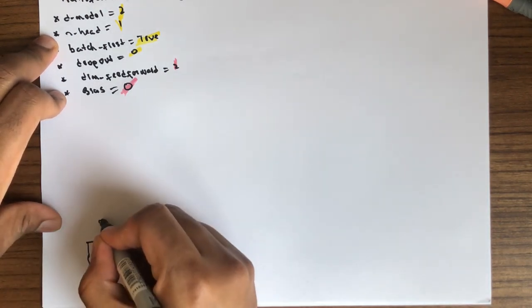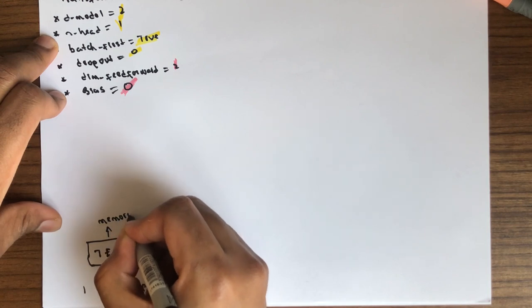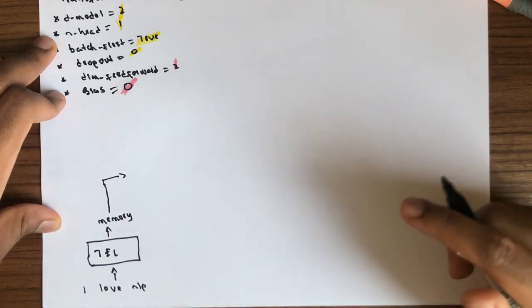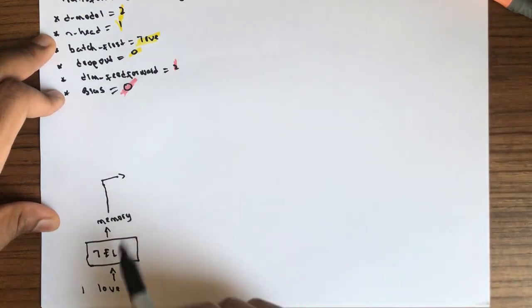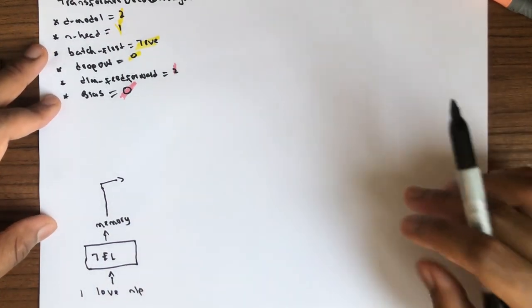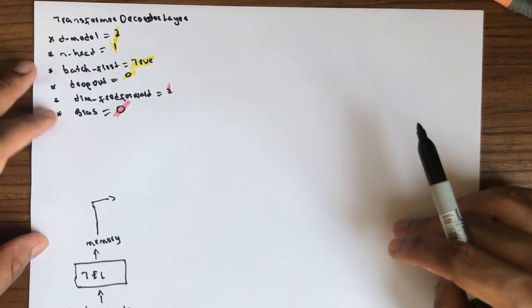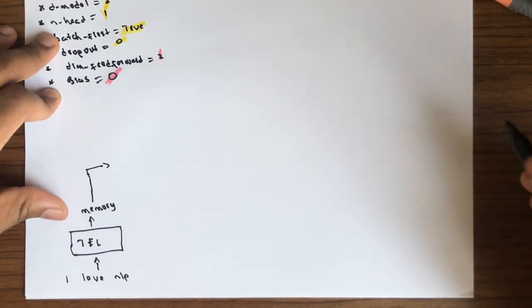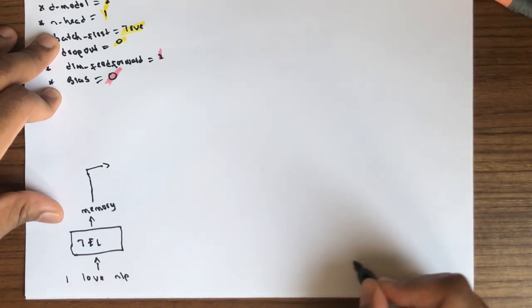And the output, in PyTorch they call it memory, the output is actually part of the input, part of the input to the decoder. Okay, all right, so the decoder takes the input.